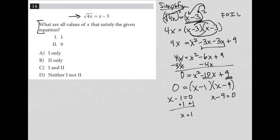So I get x equals 1, and adding 9 to both sides here, I get x equals 9. The question asks for all values of x that satisfy the given equation. Well, I got x equals 1 and x equals 9. That's both options I and II, which would mean C should be the correct answer.